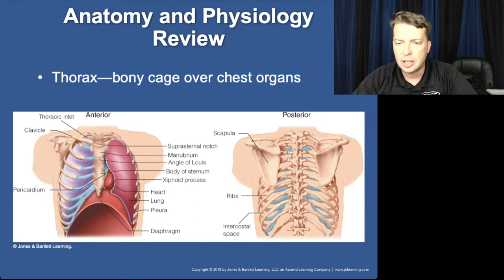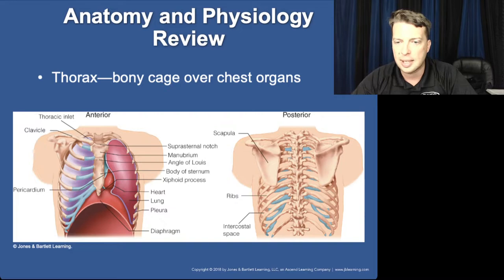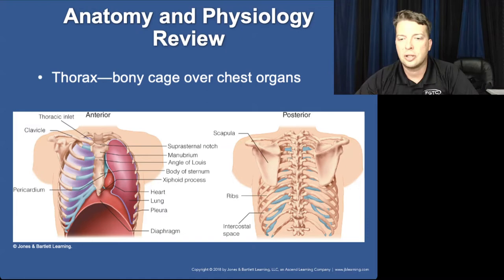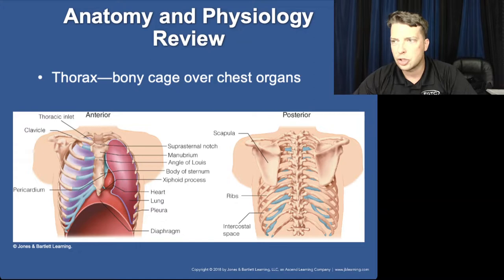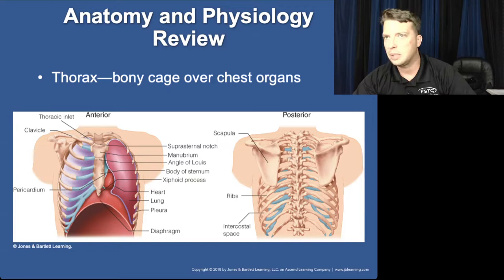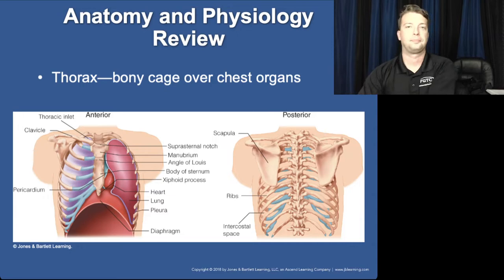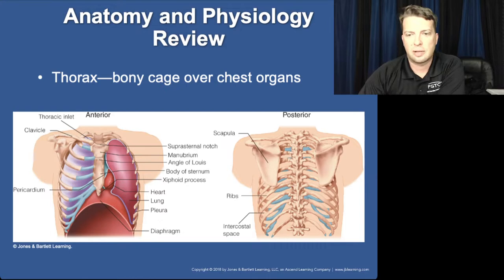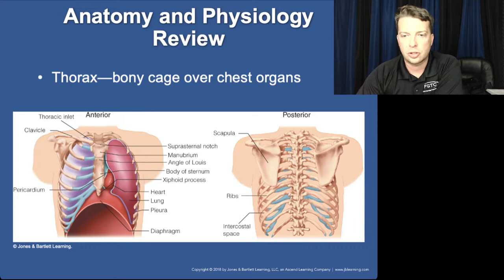The diaphragm connects to the spine at the base of T12 where the floating ribs are, then arches up to just below the xiphoid process, extending inside the thorax. This is why your liver is heavily protected by the rib cage — it sits up under the diaphragm inside the rib cage, same with your spleen and stomach. Key landmarks to remember: the manubrium is the top of the sternum, the xiphoid process is on the bottom, and the sternal notch. The large scapulas are in the back, and the clavicle connects at the front.